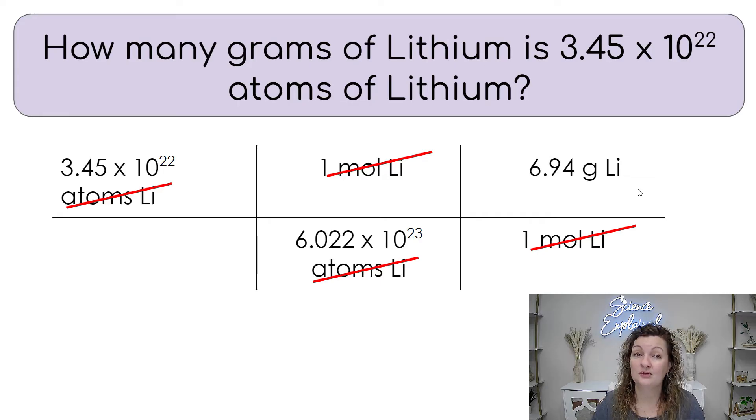So we're on the right track. Now we have to do our calculation. And the calculation is simple. You're going to multiply the top across, you're going to multiply the bottom across, and then you're going to divide those numbers. Remember that when you're dividing, the top number goes in the calculator first, and the bottom goes in the calculator second. So when you do that, you end up getting 0.4 grams of lithium.